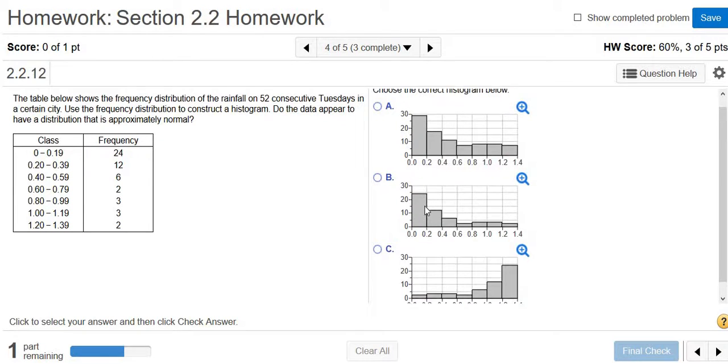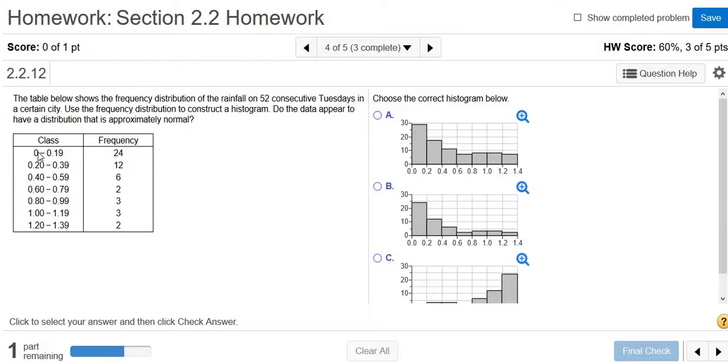So we have a couple choices here for the histogram, A, B, or C. We look at the first class, 0 to 0.19 inches of rainfall. It doesn't say it's inches, but I'm going to assume it is. And the frequency is 24.